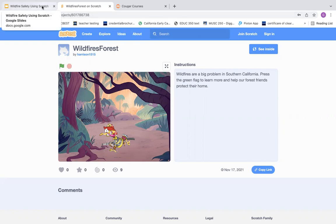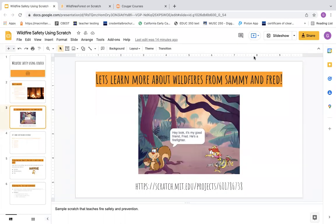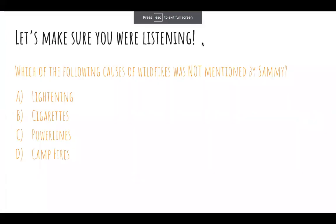Let's go back to our presentation. I hope you all paid attention because we have a little quiz. Let's make sure you were all listening. Which of the following causes of wildfires was not mentioned by Sammy? Was it A, lightning; B, cigarettes; C, power lines; or D, campfires? I'll give you a moment to come up with an answer. If you cannot come up with an answer, it's because they're all the answer — they all apply to causes of wildfires, as we saw in the video.